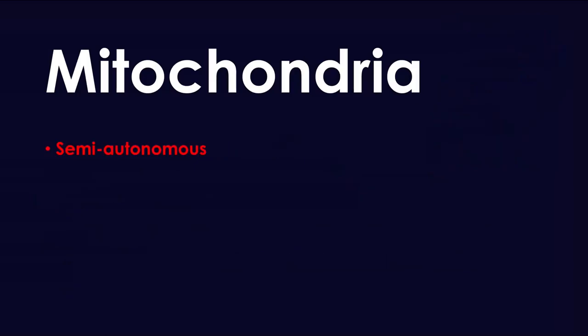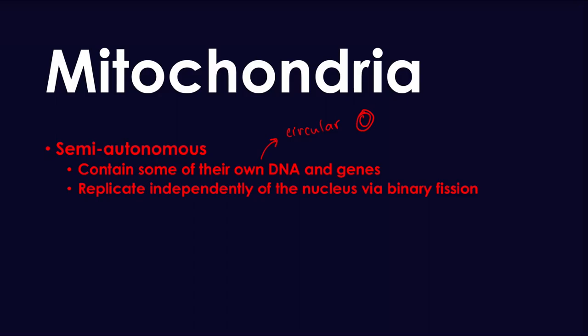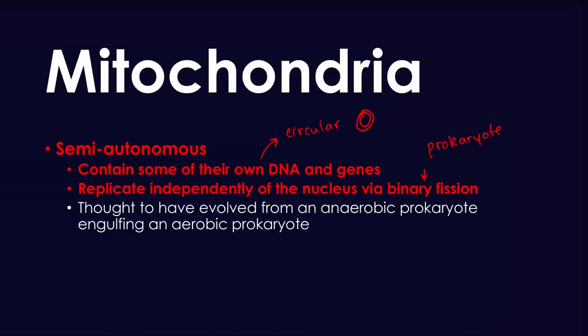The mitochondria is a semi-autonomous organelle — other than the nucleus, it is the only semi-autonomous organelle you need to know about. It contains some of its own DNA and genes, and importantly this DNA is circular, similar to plasmid-like DNA. It replicates independently of the nucleus via binary fission. This should remind you of a prokaryote, because a mitochondria was actually a prokaryotic cell that was engulfed by an anaerobic prokaryote — that's how eukaryotes got created. The mitochondria is the only other organelle besides the nucleus that contains DNA.